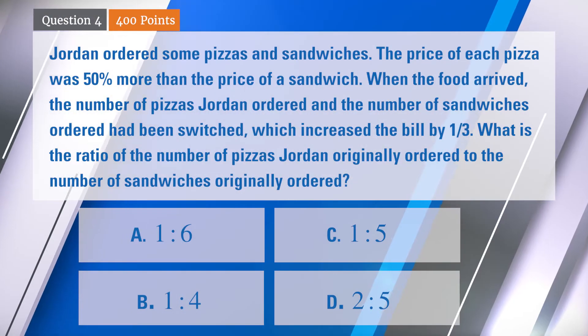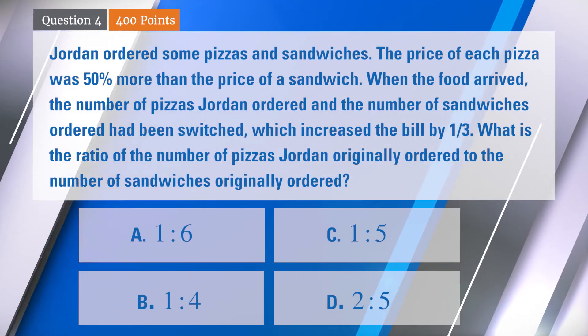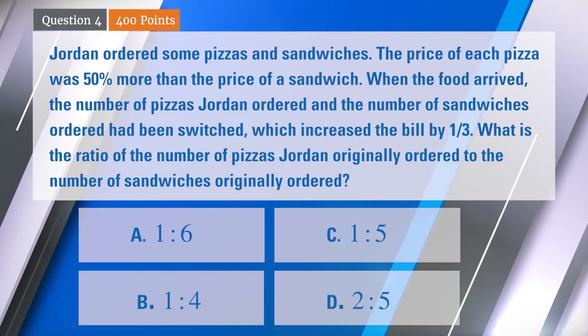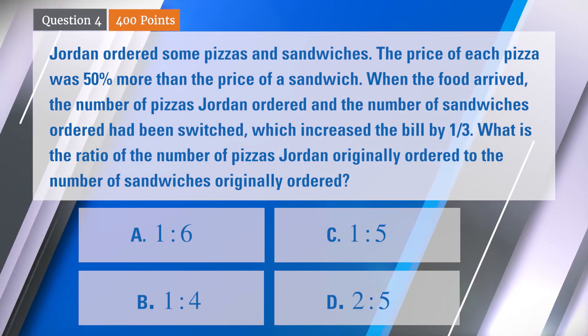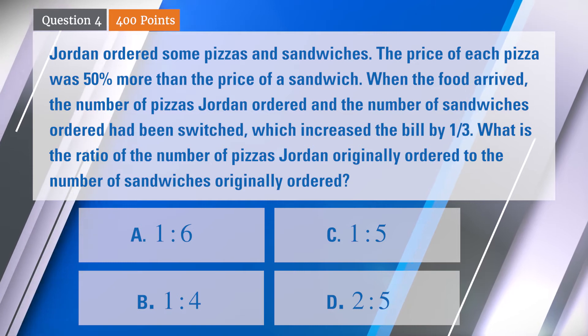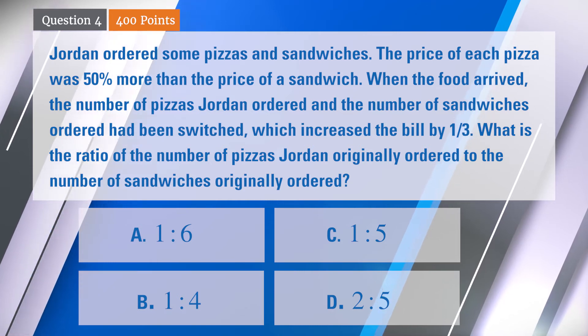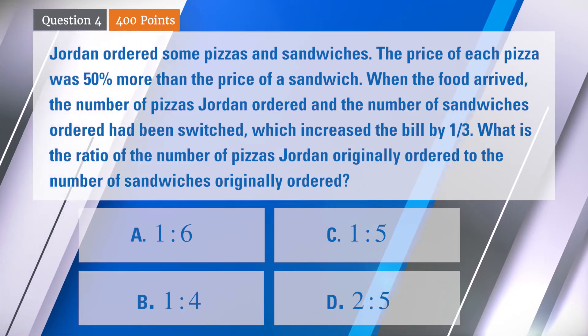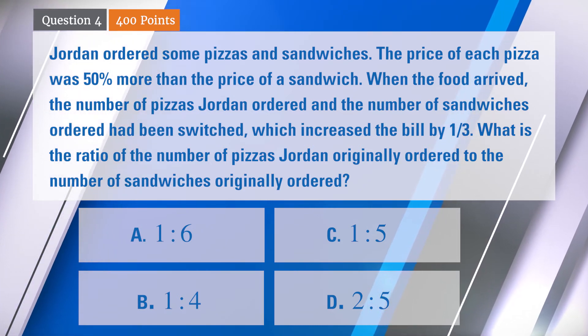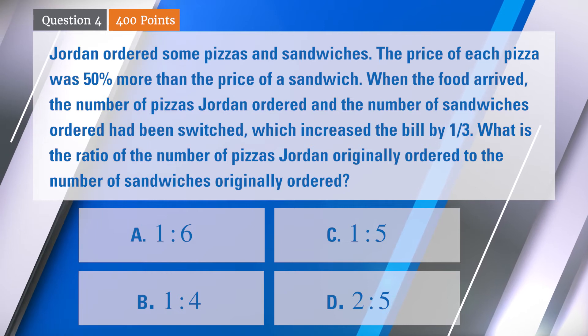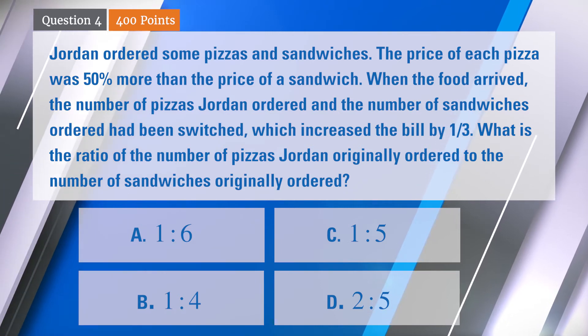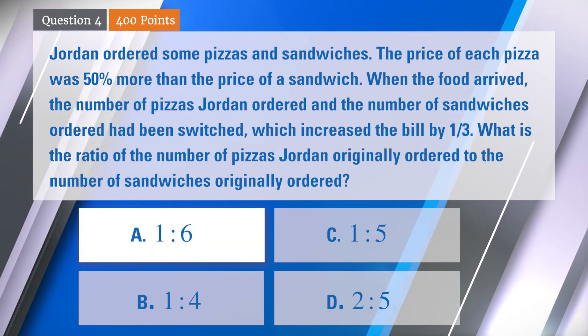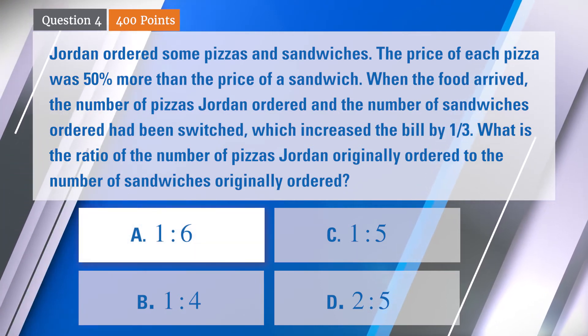All right, so seven people chose A — 1 to 6 — which if I ask the audience now, they might go with that as well. It looks pretty good at this point. We'll see if it is correct. Yes, it is. Nice going, figuring that out in 45 seconds. Very good.